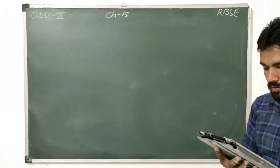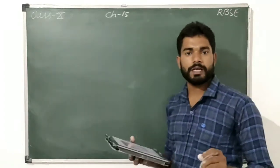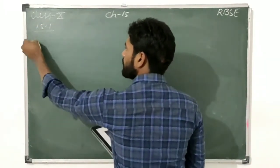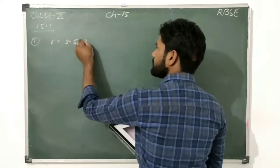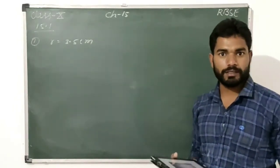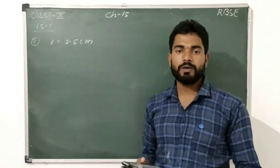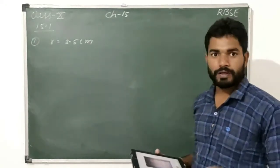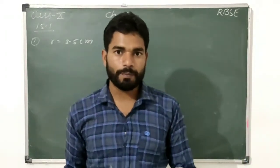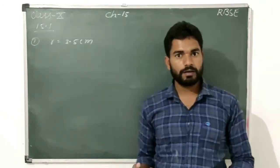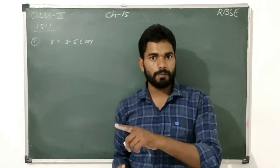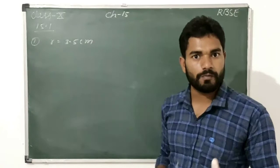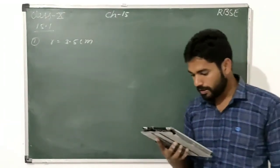Question 1 of exercise 15.1: the radius of a circle is 3.5 cm. Find the circumference and area. This is a direct formula-based question. Apply the formula: circumference equals 2πr and area equals πr². The value of π is 22/7. Note that π can also be 3.14 — use 3.14 only when the question gives a hint for it; otherwise always use π = 22/7.